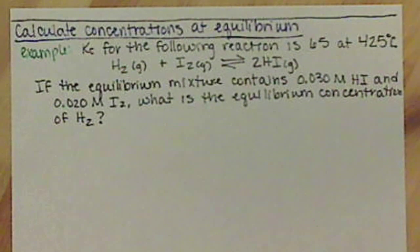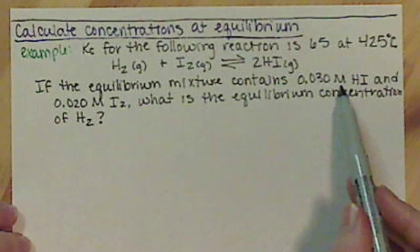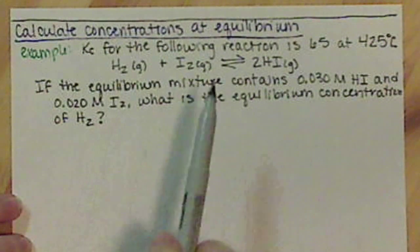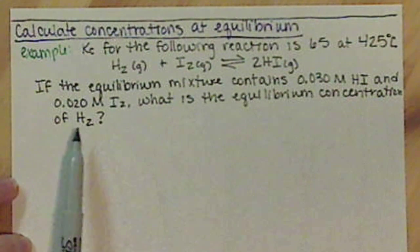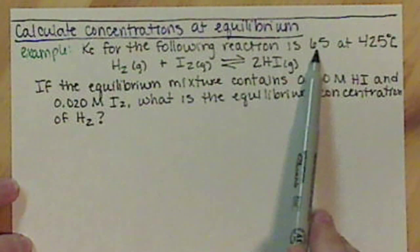So we have an equilibrium mixture. We know that we have 0.030 molar hydrogen iodide and 0.02 molar iodide. And what is the equilibrium concentration of hydrogen? And we know our Kc value is 65.